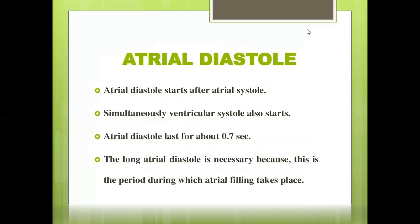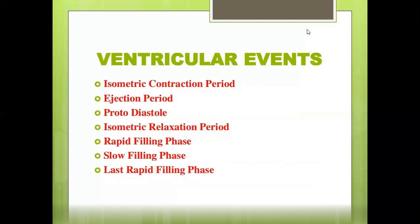After atrial systole, atrial diastole begins — the atria relax. Simultaneously, ventricular diastole starts. Atrial diastole lasts 0.7 seconds; this longer duration is necessary because the atria need time to fill with blood again.